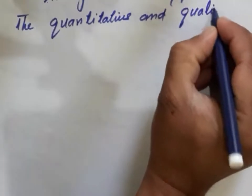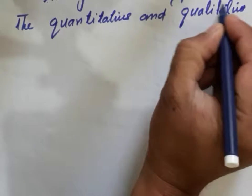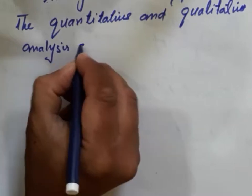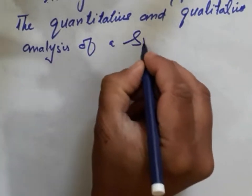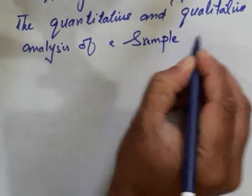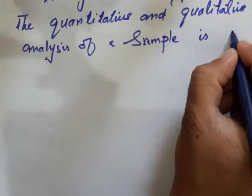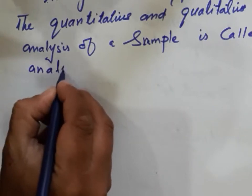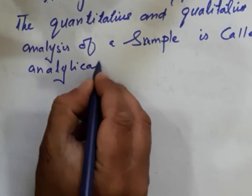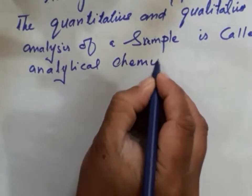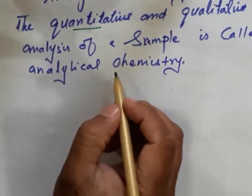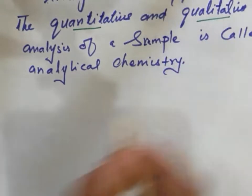The quantitative and qualitative analysis of a sample is called analytical chemistry. Analytical chemistry deals with both quantitative analysis and qualitative analysis of a sample.